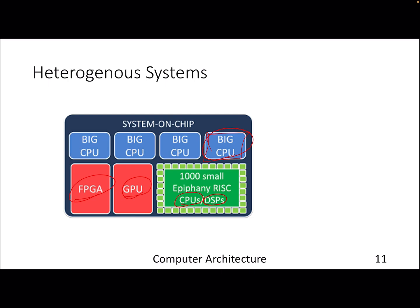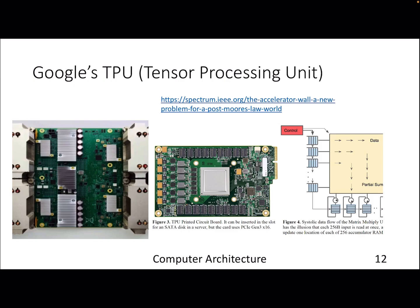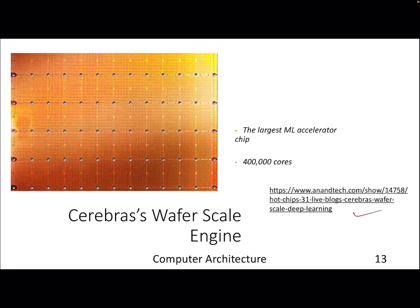In recent years there has been a trend of designing accelerators — alongside the CPU, you design an accelerator for a particular application. However, the community is also hitting an accelerator wall. One example is the TPU — Tensor Processing Unit — from Google. It is not a normal CPU; it is completely designed for handling tensor processing and follows a systolic dataflow execution model, which is different from what we covered in this course.